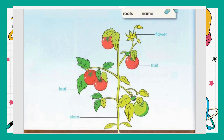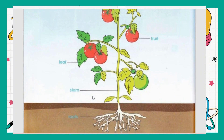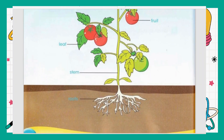Then we have the stem — S-T-E-M, stem. And then we have roots. Roots are under the soil; usually you cannot see them unless you take the plant out. They are under the soil and have different functions. Roots — R-O-O-T-S, roots.